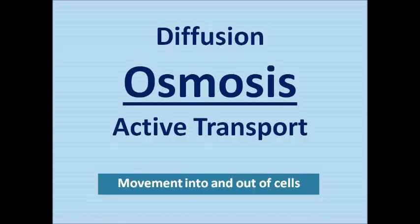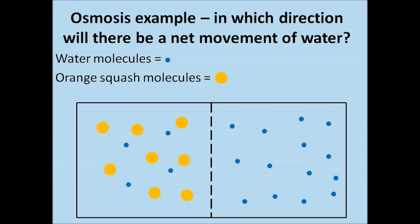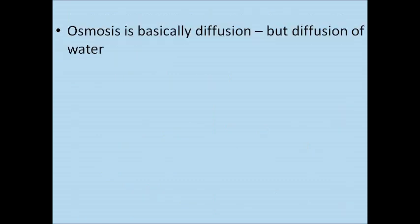Osmosis is the movement of water across a partially permeable membrane from an area of higher water concentration to an area of lower water concentration — so from where there's lots of water to where there's less water. Again, we're talking about the net movement of water, because the water is moving randomly in both directions, but overall there will be a net movement in a certain direction. In this example, the water molecules will move to the left-hand side because there are more water particles on the right-hand side. Osmosis is basically diffusion, but the diffusion of water.